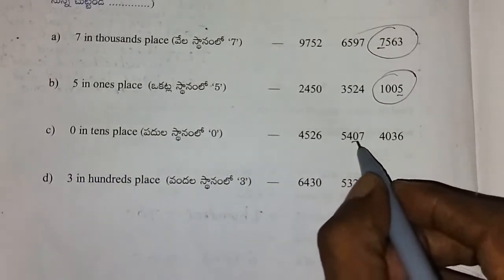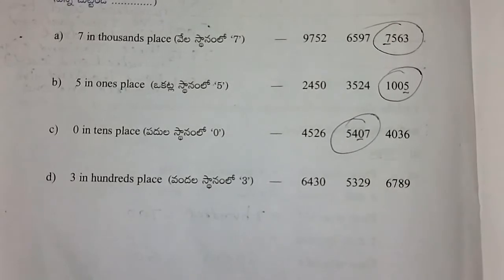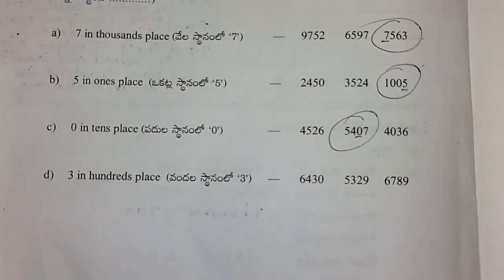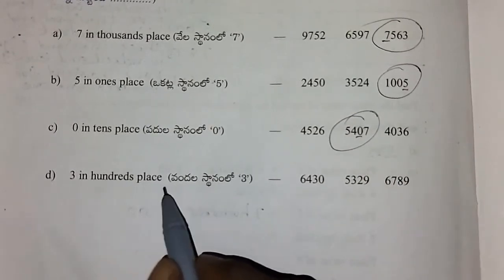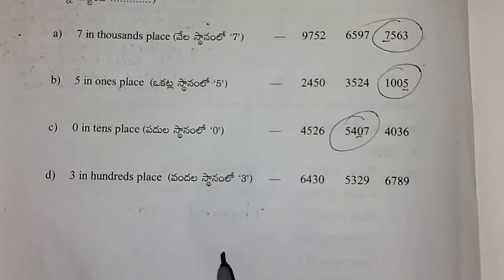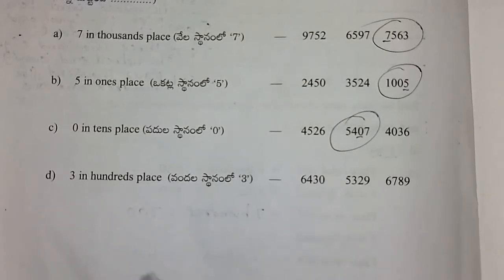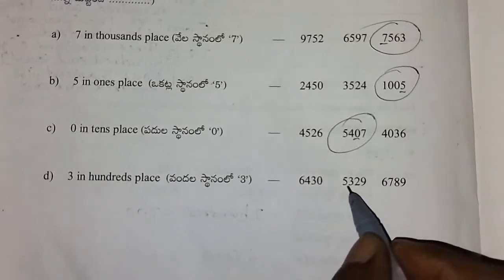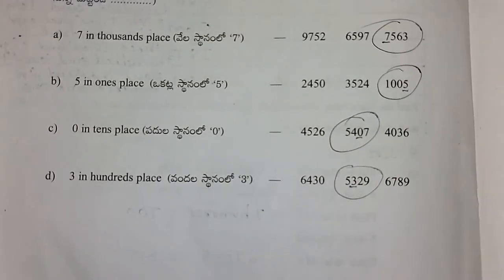Here we go. Next. The place value of 3 in the hundreds place — the hundreds place is the place value of 3. Here we go. Next.